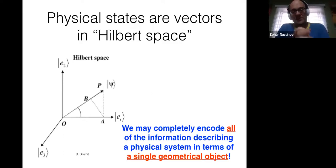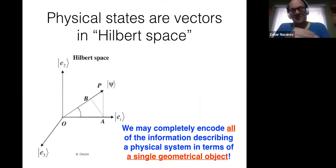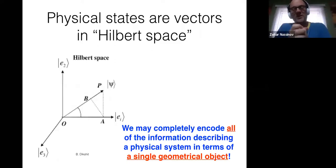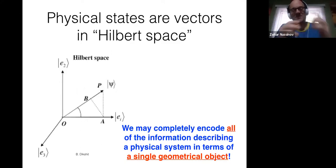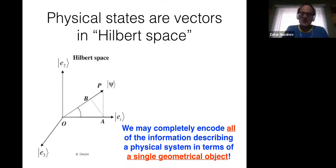We always work in quantum mechanics with vectors that have unit length. That has to do with probability — the probability of realizing any possible state has to sum to a value of one. So if you make all possible measurements, you have to find something. The normalization of probabilities relates to our description of nature in terms of this vector, but all these arrows will always have a length of one.